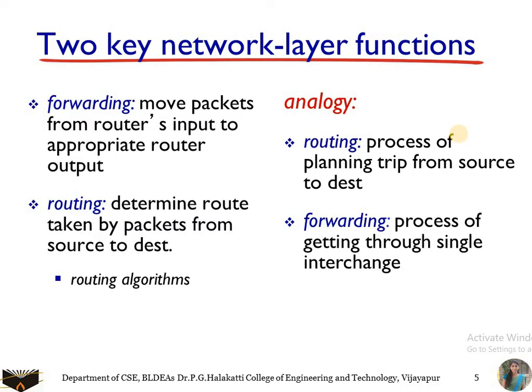All the information is pre-planned based on routing algorithms, and then the packet is sent into the network so it follows the same path and procedure to reach the destination. In forwarding, the source sends the packet to the immediate next neighbor or intermediate node, and that intermediate node decides where the packet needs to move next. Again, those intermediate nodes decide where the packet needs to move further. The router is an intelligent device containing routing algorithms, and based on that it decides where the packet needs to be forwarded.